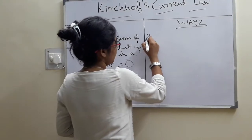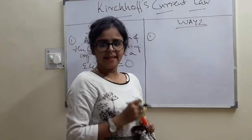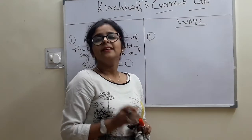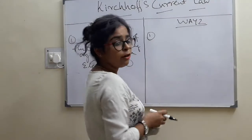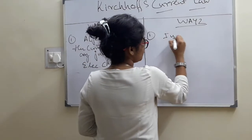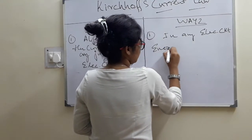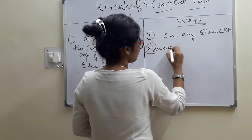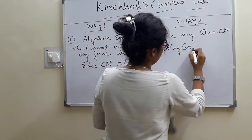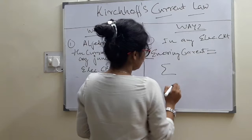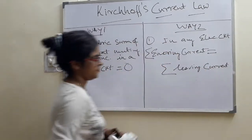And Way 2: you can represent Kirchhoff's current law like this. The current entering at any junction will be equal to the current leaving that junction of any electrical circuit. That means, the summation of entering current will be equal to the summation of the leaving current.